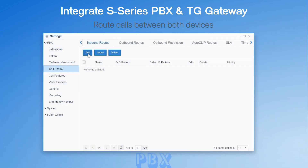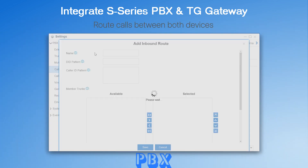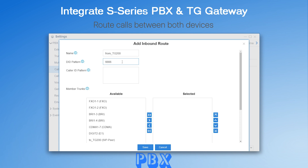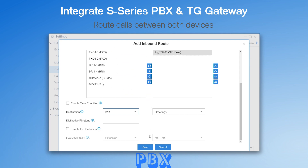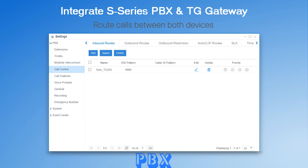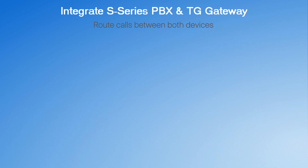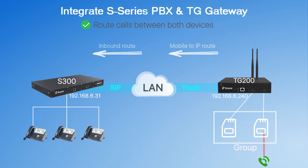Jumping to the PBX, create an inbound route. Enter the hotline number in the DID pattern, choose the trunk, and set the destination to an IVR instructing the caller to dial an extension number to get connected. Once all the settings take effect, all incoming calls from the SIM card will be connected to any of the internal extensions.